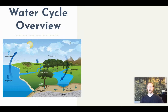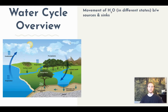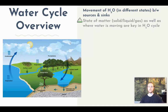The hydrologic cycle is the movement of water in different states between different sources and reservoirs. In this cycle we focus on what state of matter the water is traveling in — whether that's solid, liquid, or gas — but also where the water is moving: what reservoir is it leaving and what reservoir is it entering?